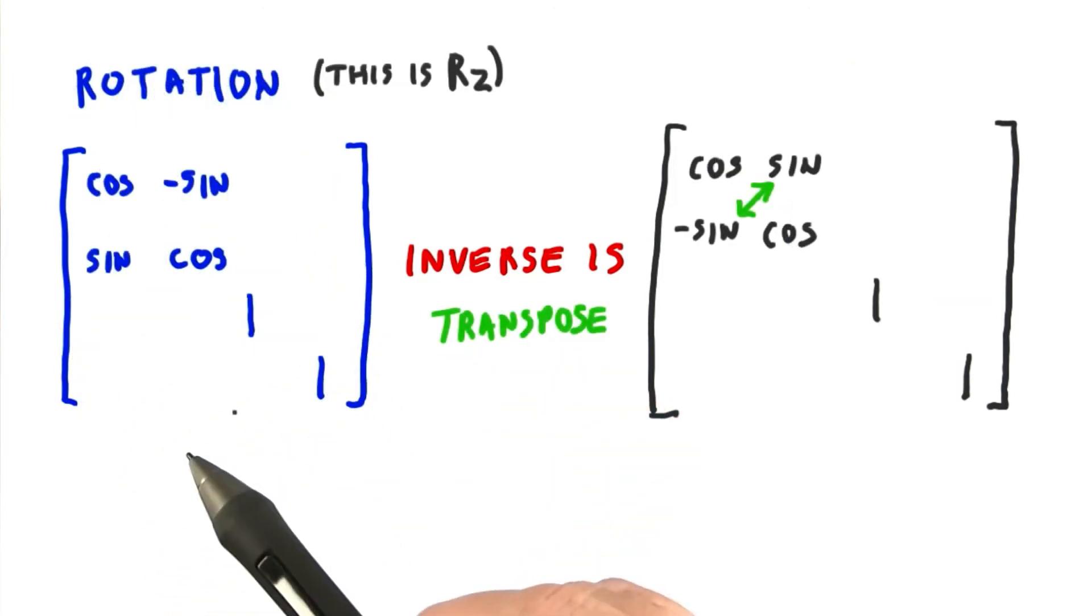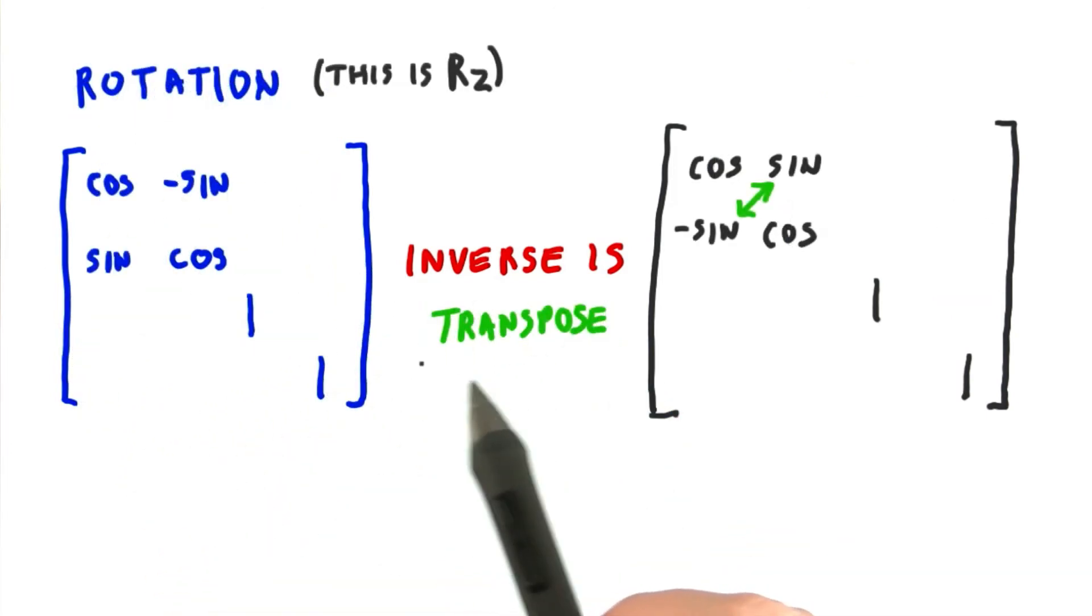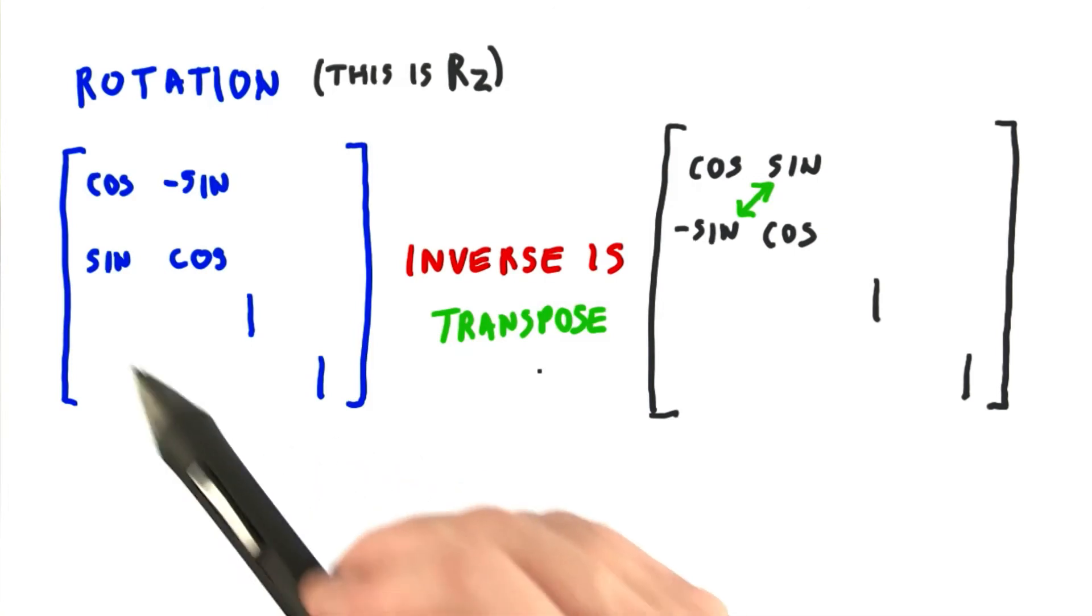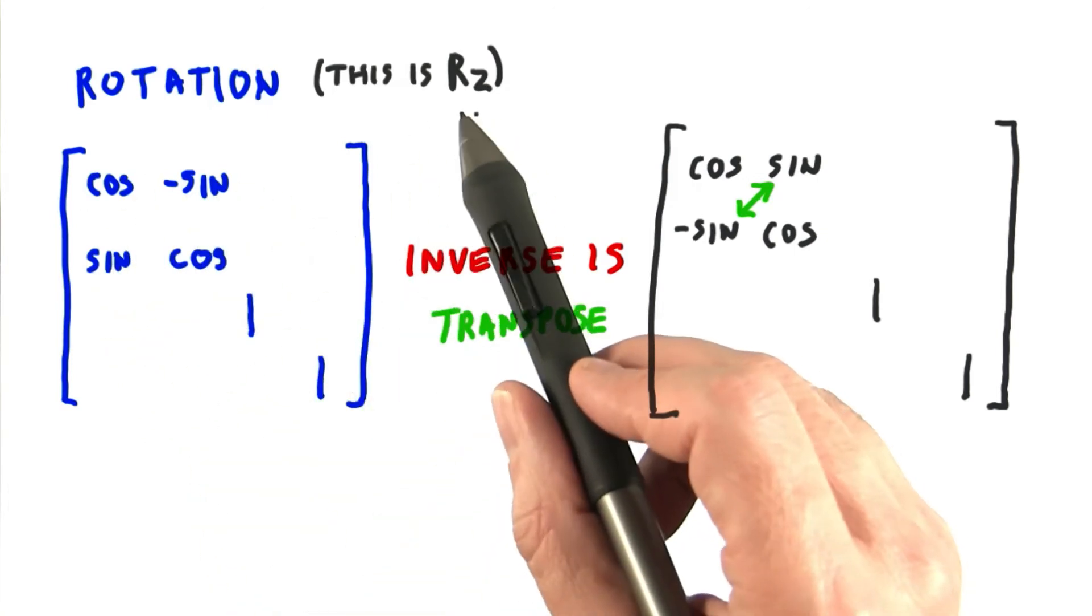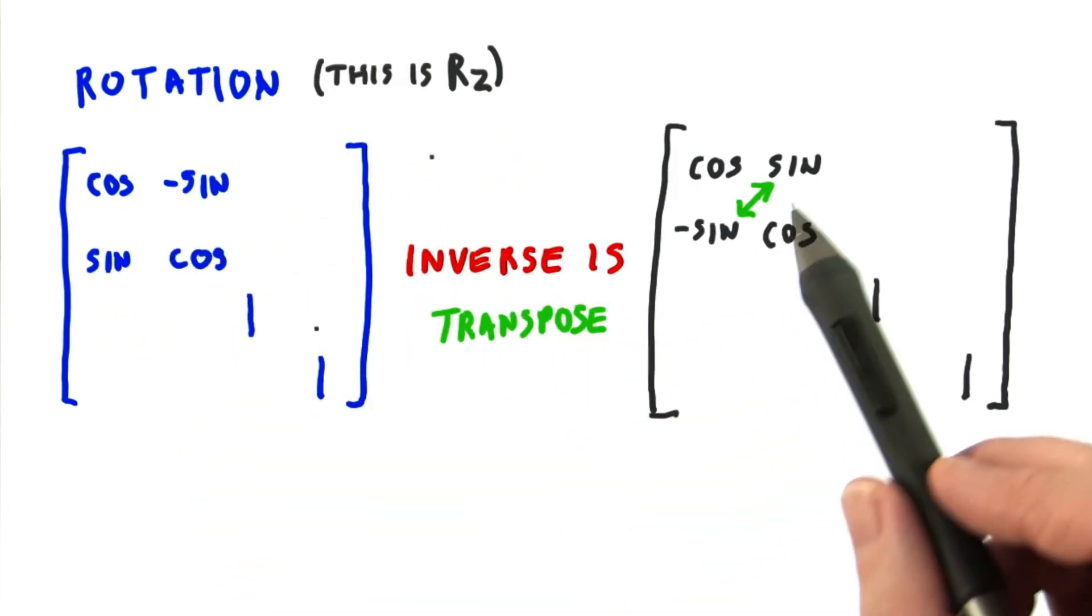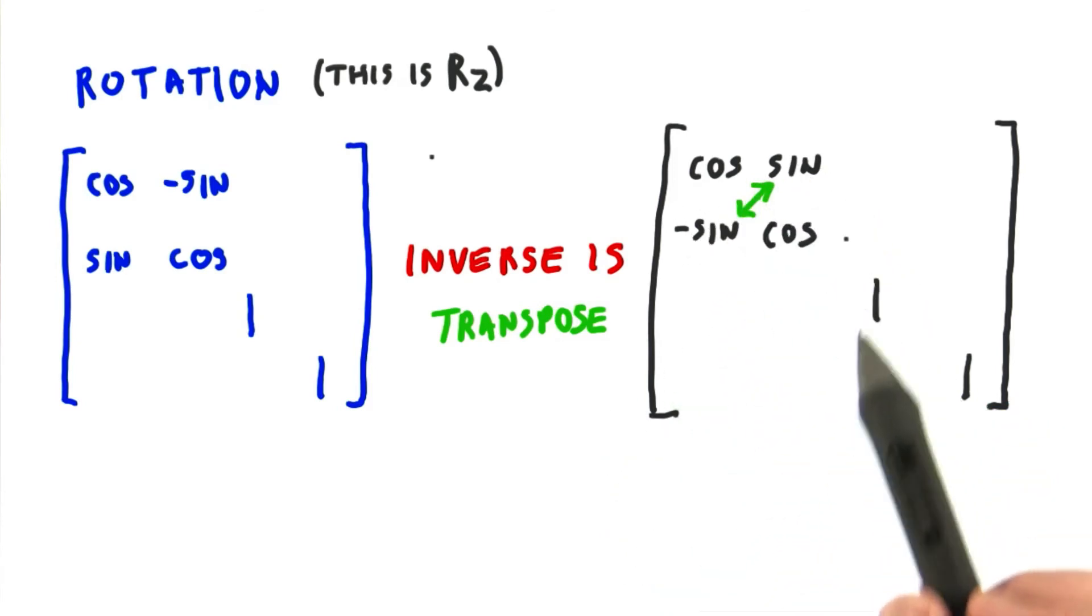For any rotation matrix, it turns out that the inverse is the transpose. So, for this one, for example, it's a rotation around the z-axis, and you simply transpose these two elements, and you now have the inverse of the z-rotation.